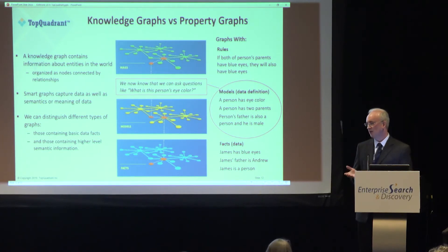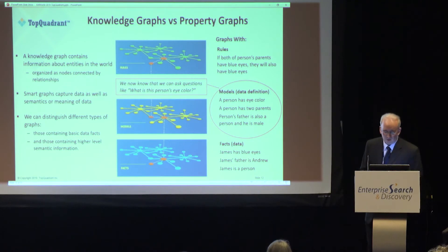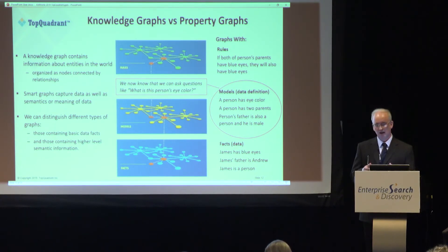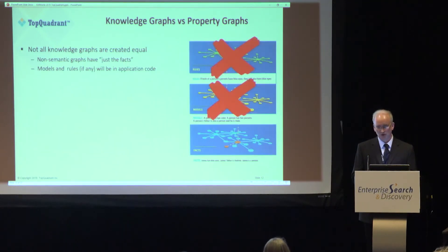That's not stored in our knowledge graph, but we can conclude it based on the model and the rules we have in place. So a search for all people with blue eyes would get back Andrew as well as James. This is information we've deduced — knowledge deduced based on what we know — and we're able to do that because we have the model and rules in place.